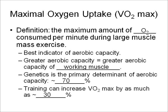First slide: maximal oxygen uptake, or VO2 max. The definition is the maximum amount of O2 consumed per minute during large muscle mass exercise. It is the best indicator of aerobic capacity — the greater the aerobic capacity, the greater the aerobic capacity of working muscle. Genetics is the primary determinant of aerobic capacity, around 70%. Training can increase VO2 max by as much as 30%, and obviously that's for the general human population — you're going to find variance from individual to individual.